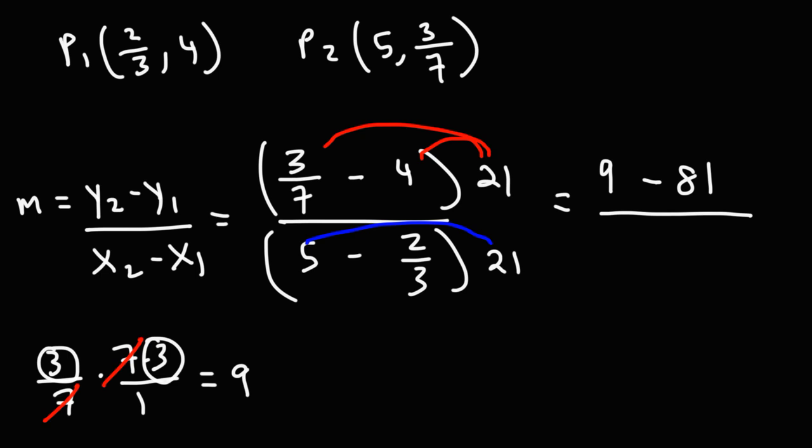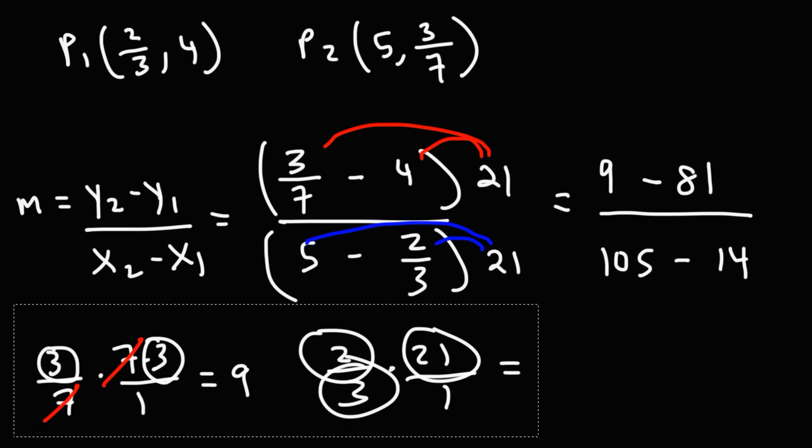Now, 21 times 5. 20 times 5 is 100. 1 times 5 is 5, so this is going to add up to being 105. And then finally, we have 21 times 2 over 3. What you could do is 21 divided by 3, which is 7, times 2, that will give you 14. So that's what we now have.